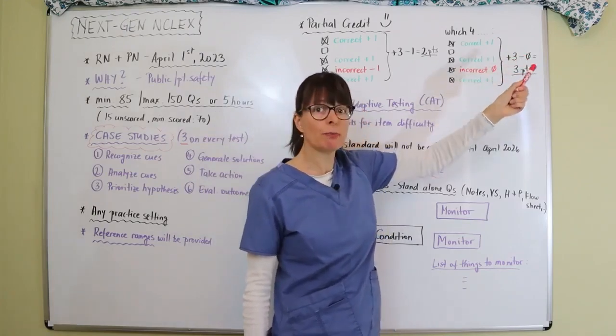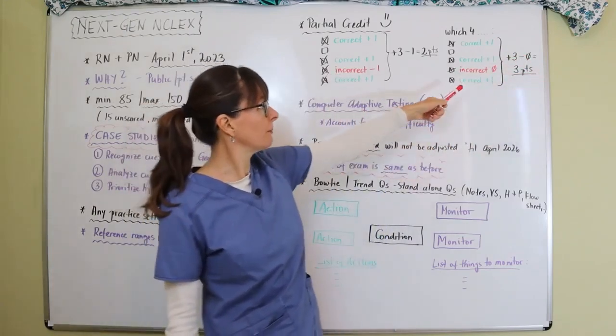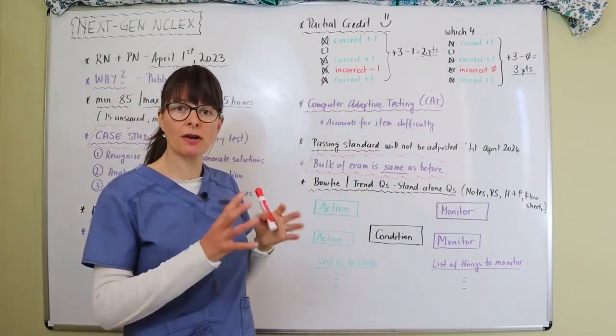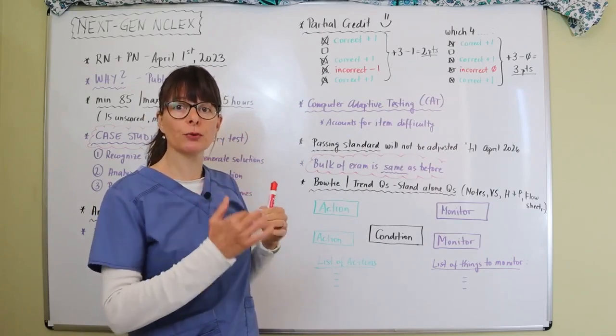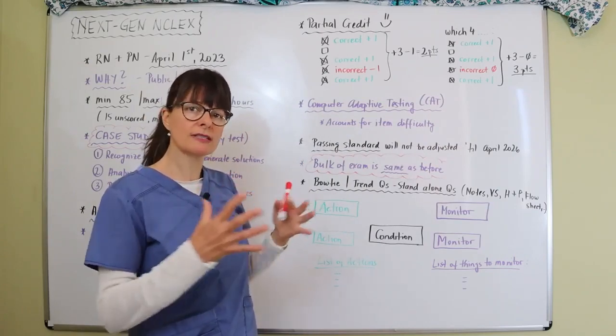So now you have plus three because you got three correct, but the incorrect one doesn't count for a minus point, so that's basically three minus zero, you get three points here out of the possible four.